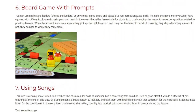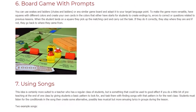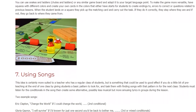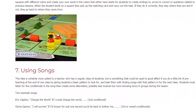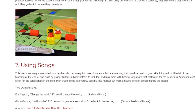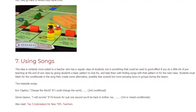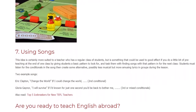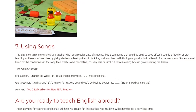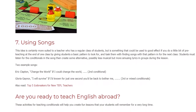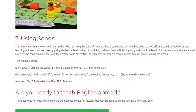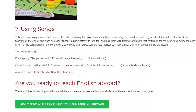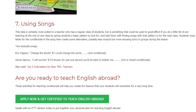7. Using Songs. This idea is certainly more suited to a teacher who has a regular class of students, but could be used to good effect if you do a little bit of pre-teaching at the end of one class by giving students a basic pattern to look for, and tasking them with finding songs with that pattern for the next class. Students must listen for the conditionals in the song then create some alternative — possibly less musical but more amusing — lyrics in groups during the lesson. Example songs: Eric Clapton 'Change the World' (first conditional); Gloria Gaynor 'I Will Survive' (mixed conditionals).